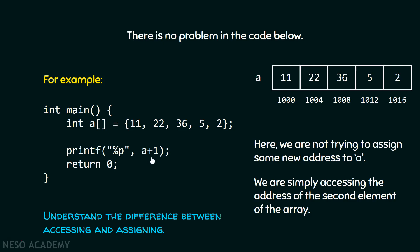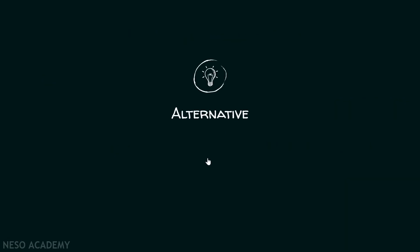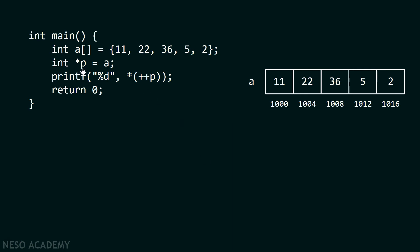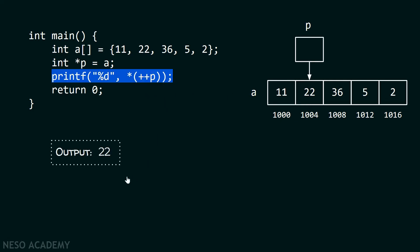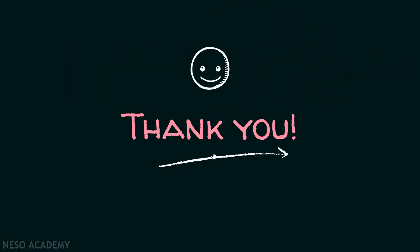But there is always an alternative. We can use another pointer which can be a representative of the array 'a', assign it the base address of 'a', and then do pointer arithmetic. Here, *p = a means the pointer simply points to the first location of the array 'a'. Then ++p increments the pointer one position forward, and with the dereference operator I can access the value 22 and print it on the screen. The conclusion is: we cannot assign a new address to the name of the array, but we can use a pointer as a representative of the array and perform any arithmetic we need.